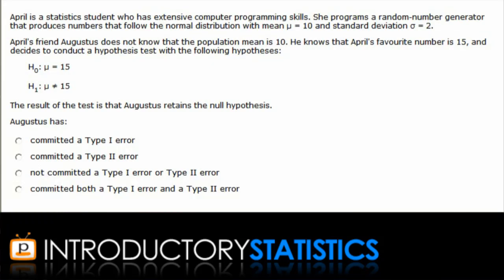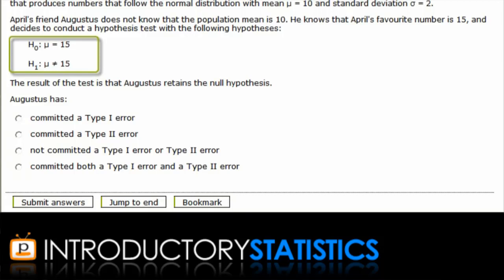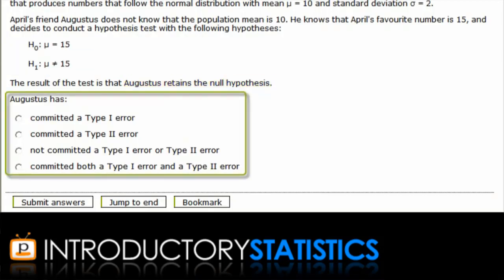In this question, April has a number generator that produces numbers from the normal distribution with mean 10 and standard deviation 2. Augustus, who doesn't know the mean is 10, decides to test whether the mean of April's program is 15. So, his null hypothesis is that the mean is 15. Augustus retains this incorrect null hypothesis and you're being asked what type of error or errors he has committed.